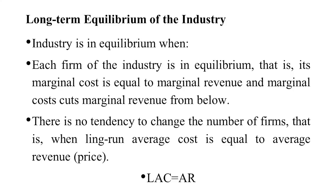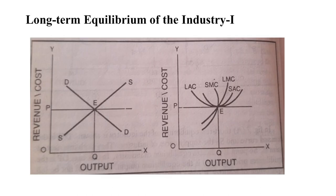For long-run equilibrium of the industry, these conditions must be fulfilled: each firm of the industry must be in equilibrium — meaning MC equals MR and MC cuts MR from below. Second, there must be no tendency to change the number of firms — that is, long-run average cost (LAC) equals average revenue (price). On the graph, at point E when price is OP and output is OQ, SAC, SMC, LMC, and LAC are all equal.